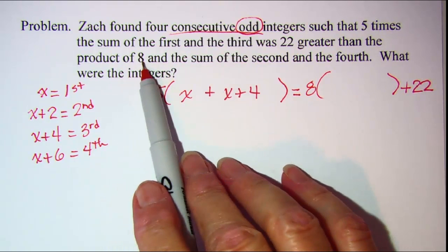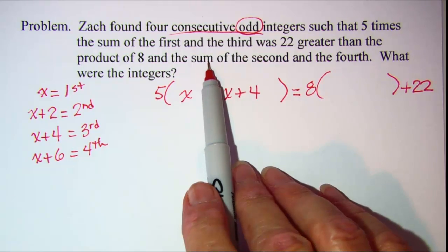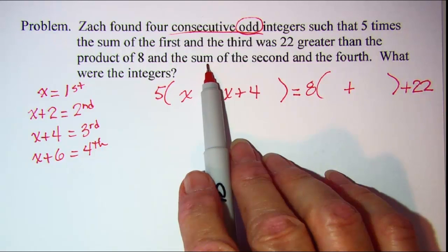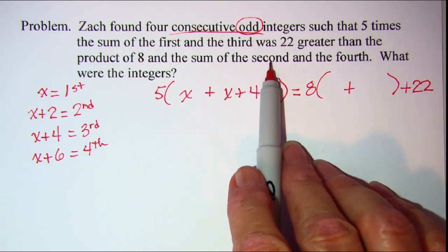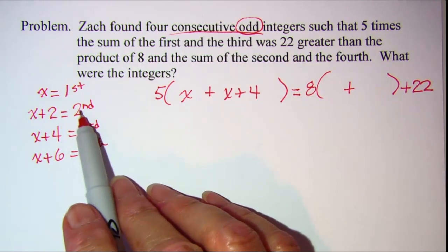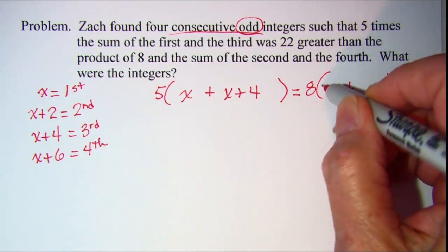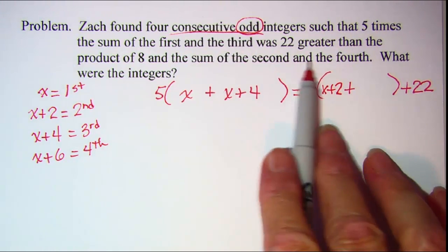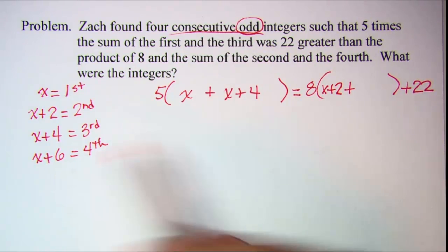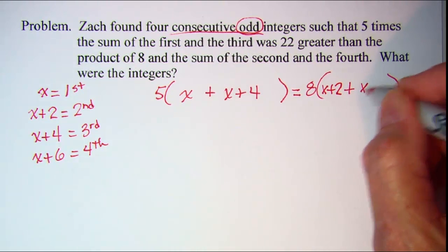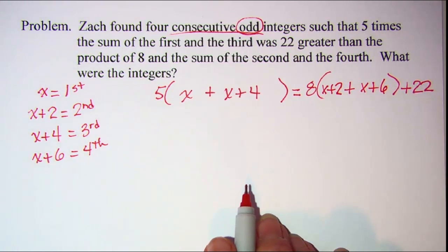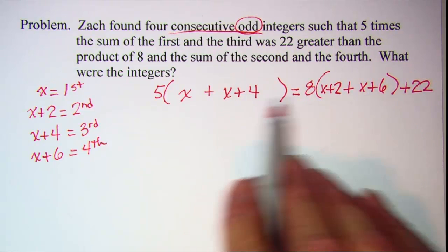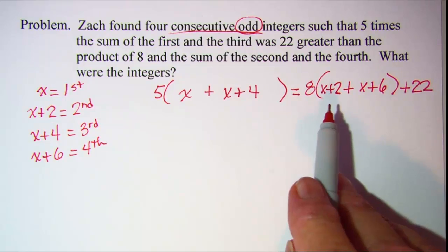So the product of 8 and the sum of, so I need to add two things together to get my sum. The sum is of the second and the fourth. The second is represented by x plus 2. Now we've translated the word problem into an algebraic equation. Now we just need to work it out.